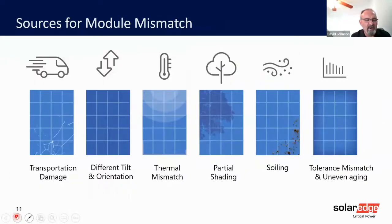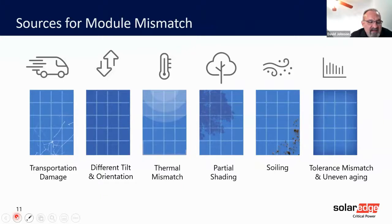What else can cause module mismatch? Many reasons. Some can't even be seen, like microcracks. Some are very invisible, like shading. Some can be expected, like obstacles on the roof. Some cannot, like dirt and bird soiling. Some are permanent, like damage to the module, and some are transient, like cloud shading.